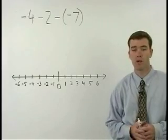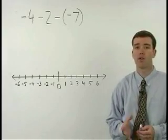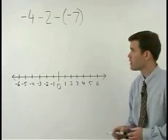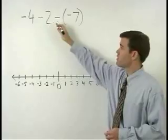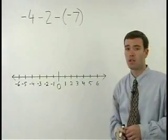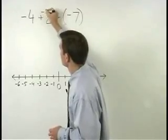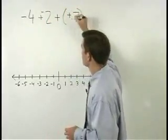This problem combines all the ideas we've been talking about for adding and subtracting positives and negatives. So negative 4 minus 2 minus a negative 7 should first be changed to negative 4 plus a negative 2 plus a positive 7.